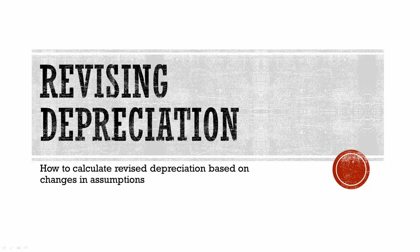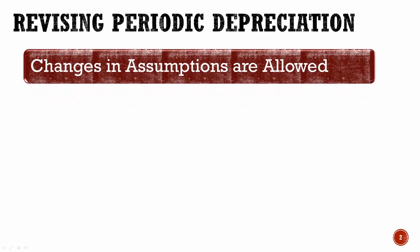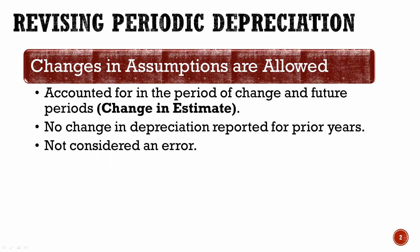Let's take a look at how we do the calculations when we are revising depreciation. When we're revising periodic depreciation, management is allowed to make changes in the assumptions that they originally had when they bought the asset. When we do that, it's accounted for as a change in the future, meaning that we don't go back and recalculate depreciation on the prior years. We're just going to find our new assumptions and move forward.